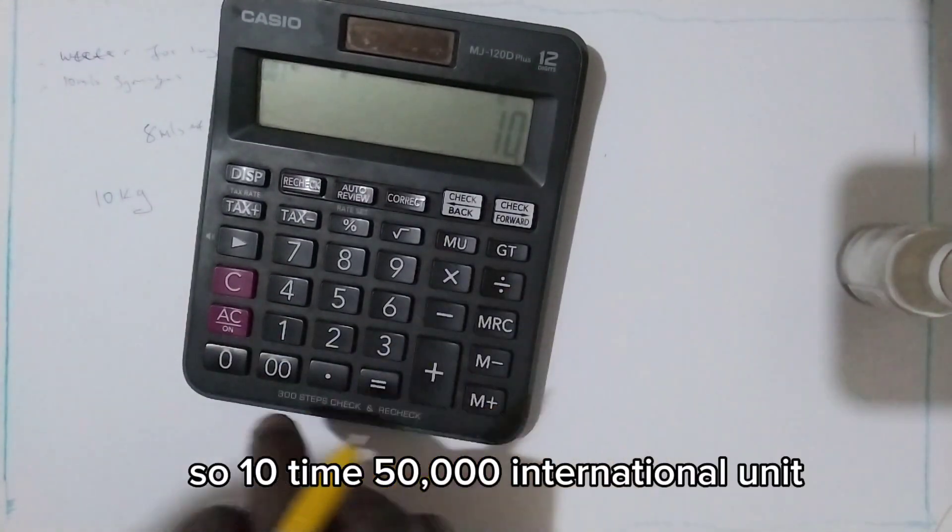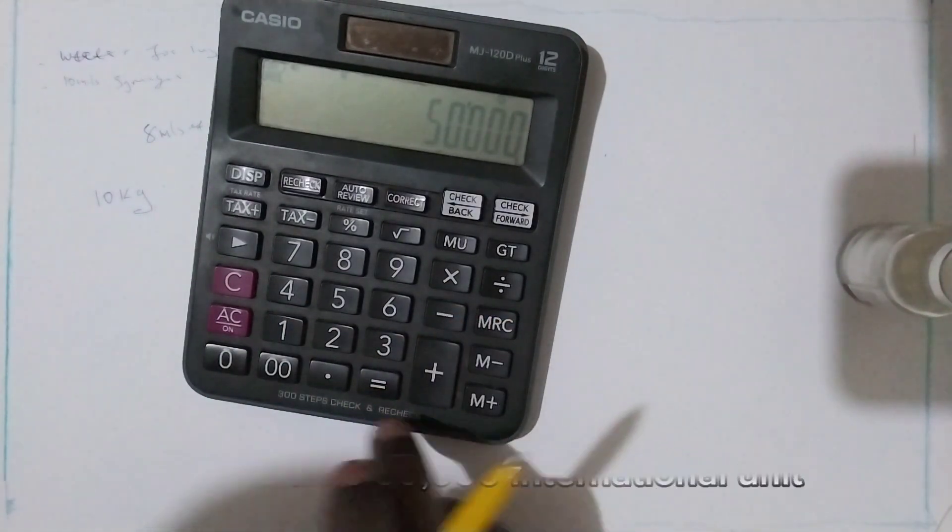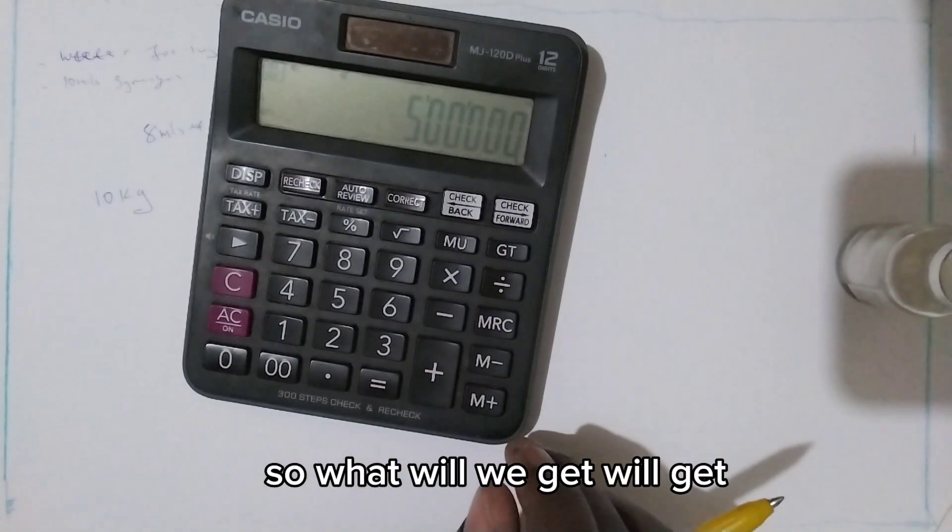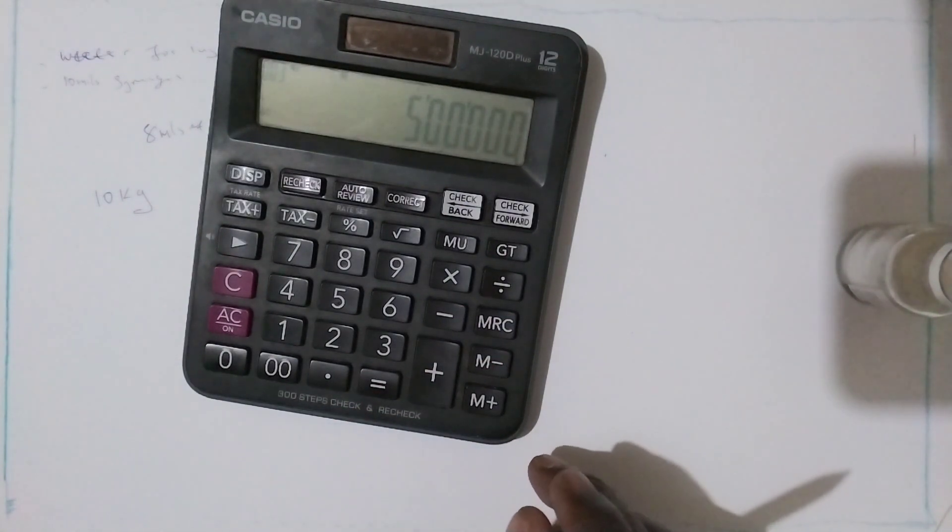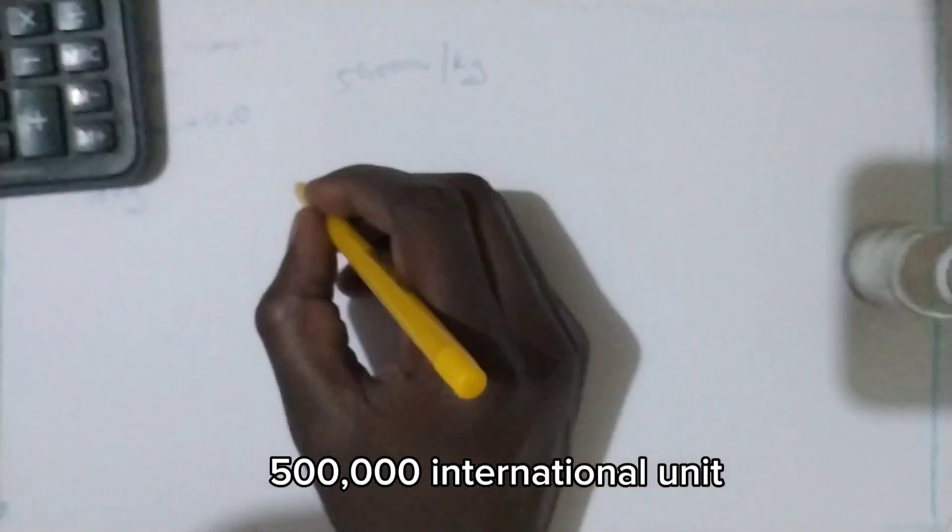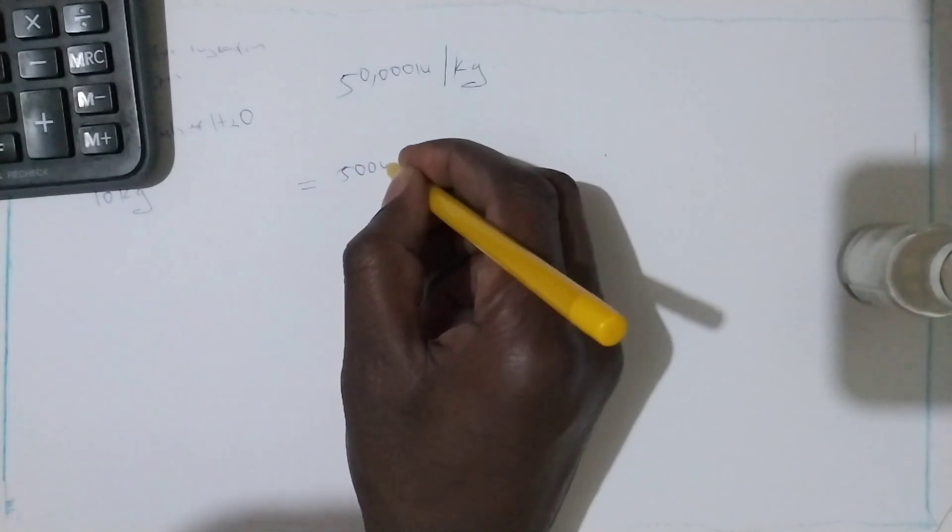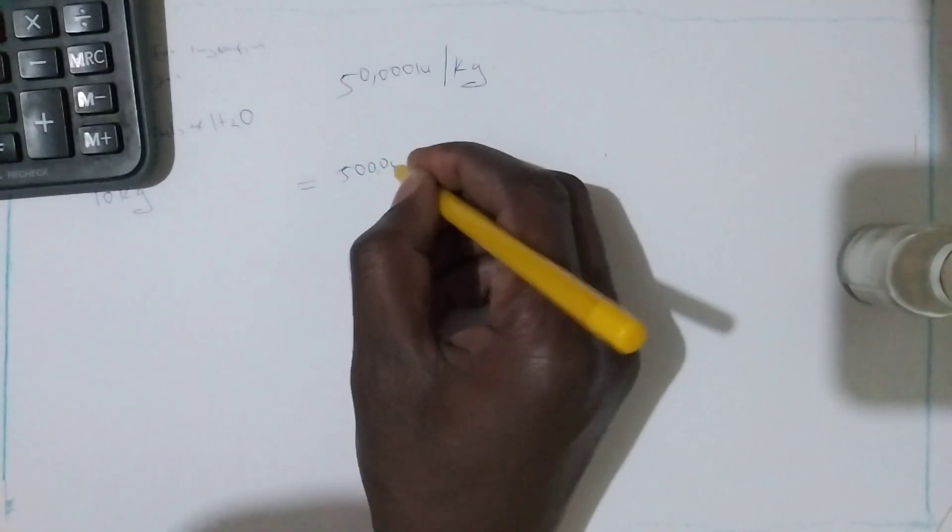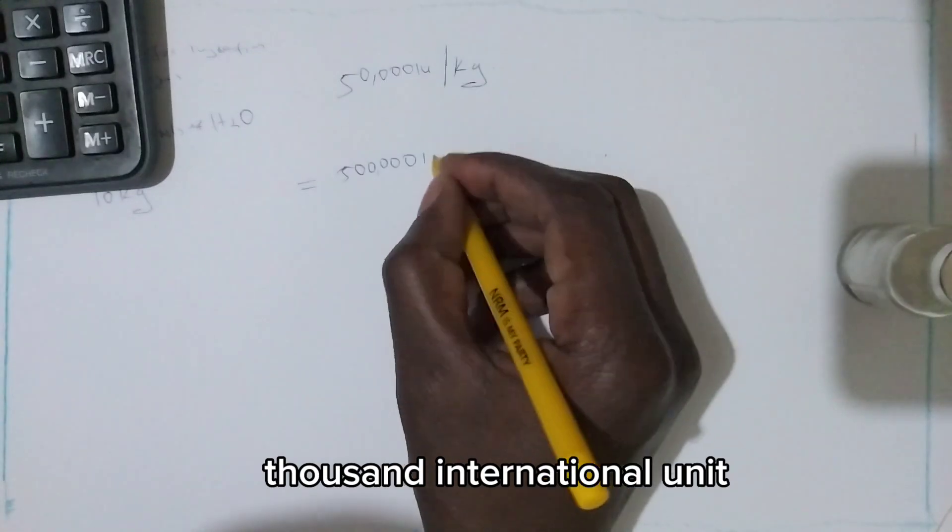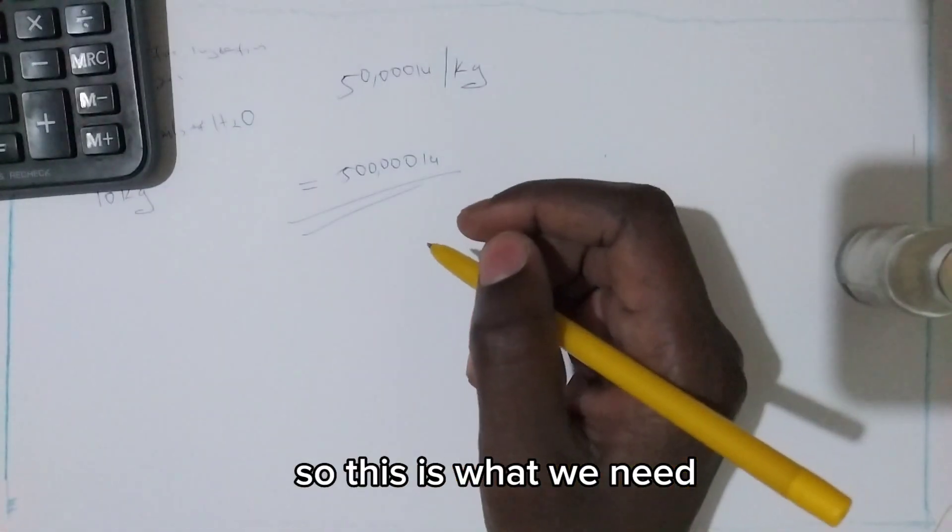So 10 times 50,000 international units. What will we get? We will get 500,000 international units. So ours will be 500,000 international units. This is what we need.